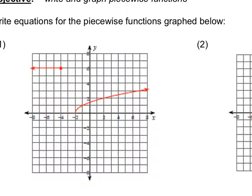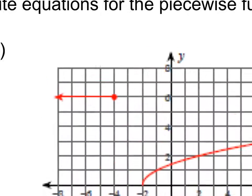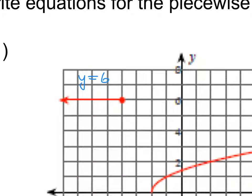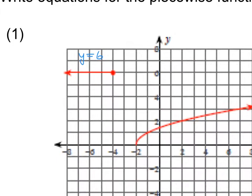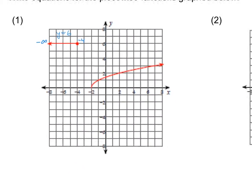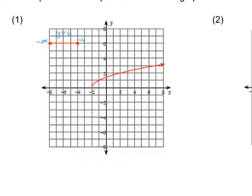This one is a little bit easier because it's pretty obvious we're looking at a horizontal line. That line has an equation of y equals 6. You should have in mind that the domain is going from negative infinity to negative 4. Then you want to look at this one and try to identify what parent function it most closely resembles. There aren't any trick questions here — that's a square root function, not half of a cube root function.